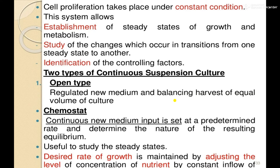In continuous suspension culture, cell proliferation takes place under constant conditions. This system allows establishment of steady states of growth and metabolism, study of changes which occur in transitions from one steady state to another, and identification of controlling factors. There are two types of continuous suspension culture: open type and closed type. Open type is regulated by adding new medium and balancing it with the harvest of an equal volume of culture.